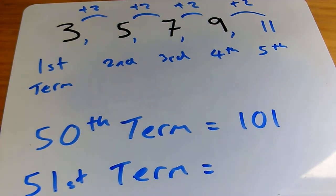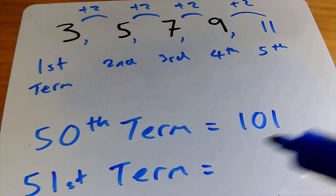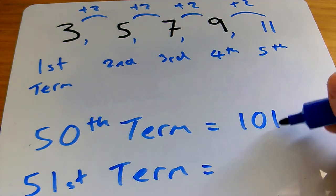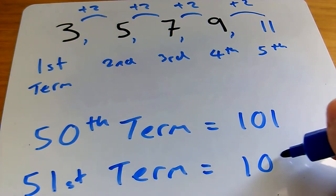Well, I hope you've thought about that and realized that to get to the next term, you just have to add 2. That rule is the same all the way through the sequence, so therefore the 51st term is going to be 101 add 2, 103.